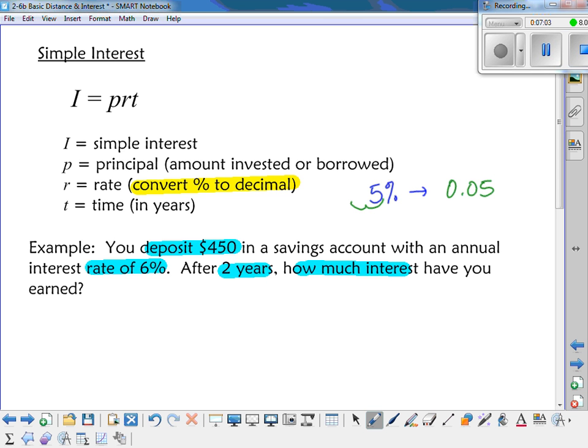So depositing 450, is that I, P, R, or T? It's the money you put in the bank, isn't it? So it's the P. It's the principal. The rate of 6%, that's pretty easy. That's R. And if I'm going to make it a decimal, what is it? 0.06. After two years, two years is my time. And how much interest? That's the capital I that I'm trying to find.